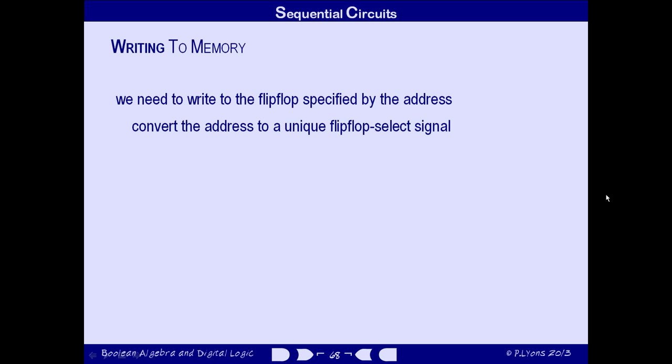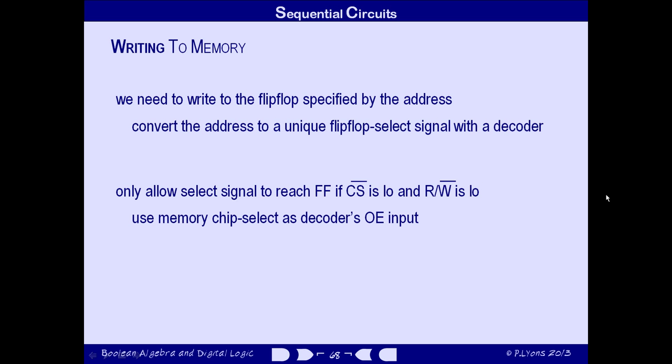So, we take the binary address, which is encoded, and decode it. But that's not all. We have to take into account the control signals, chip select and read-not-write that are input into the memory device. The decoded address should only clock information into the flip-flop if the voltages on the chip select and read-not-write inputs are low.